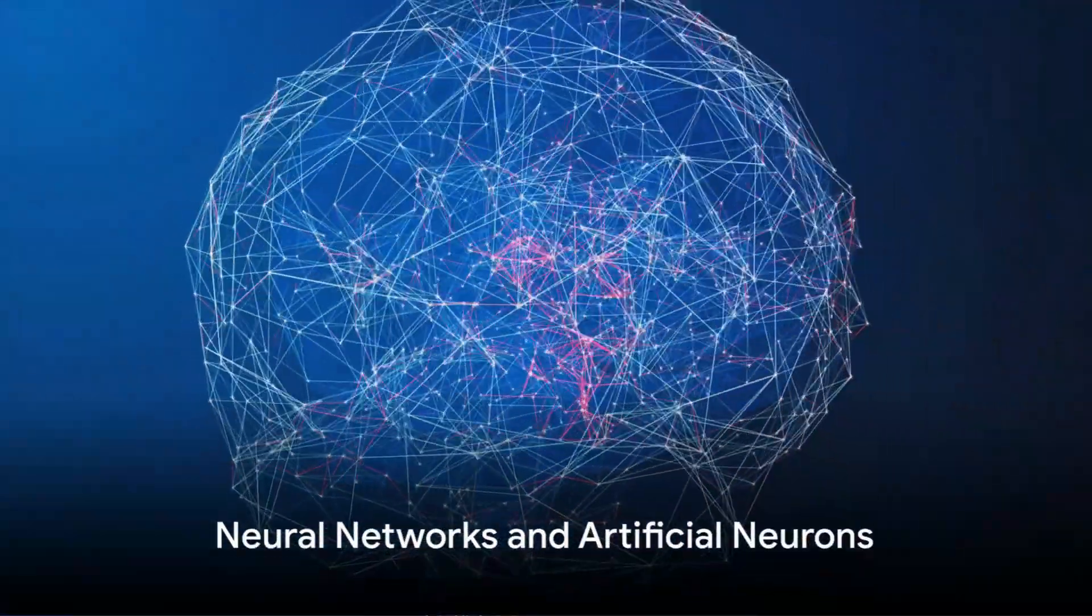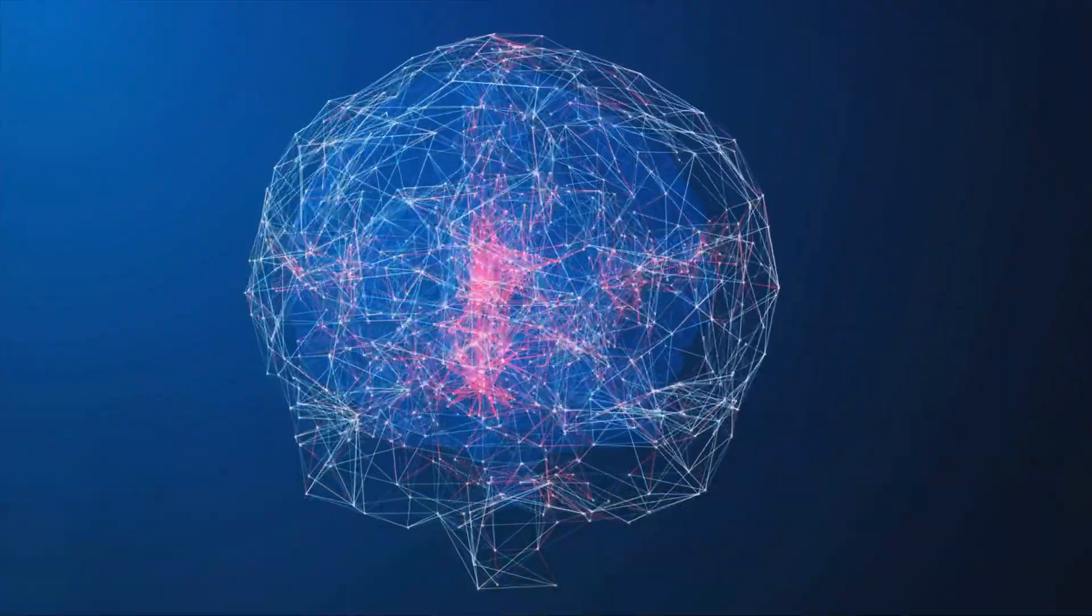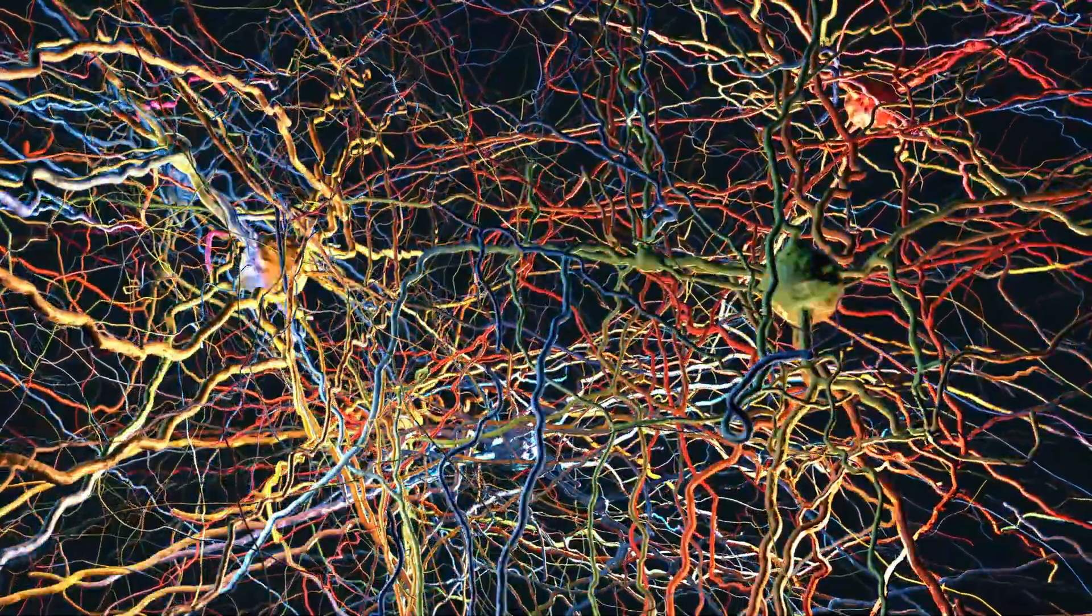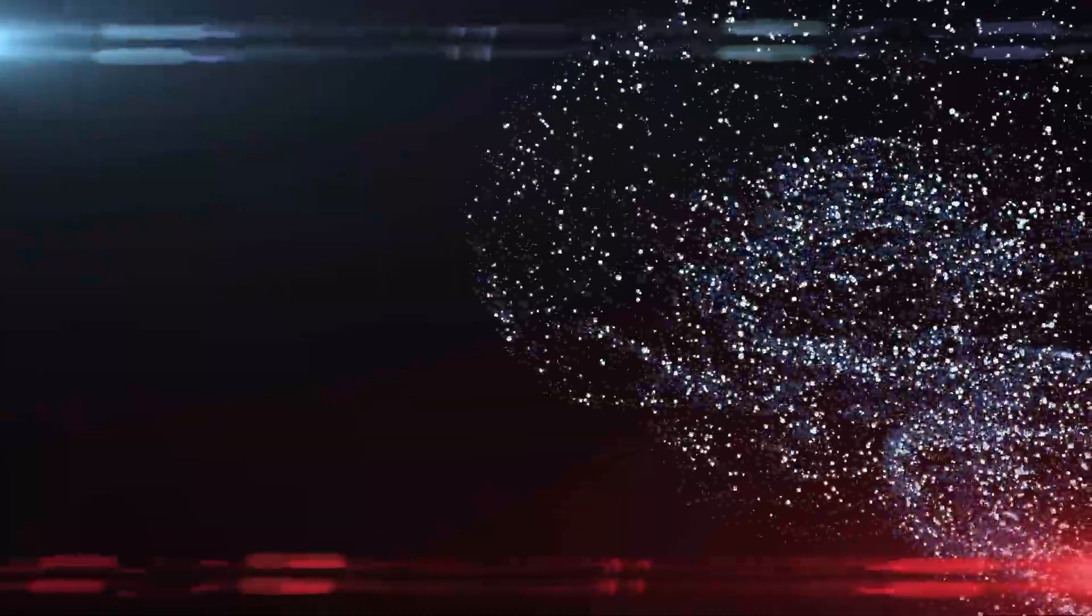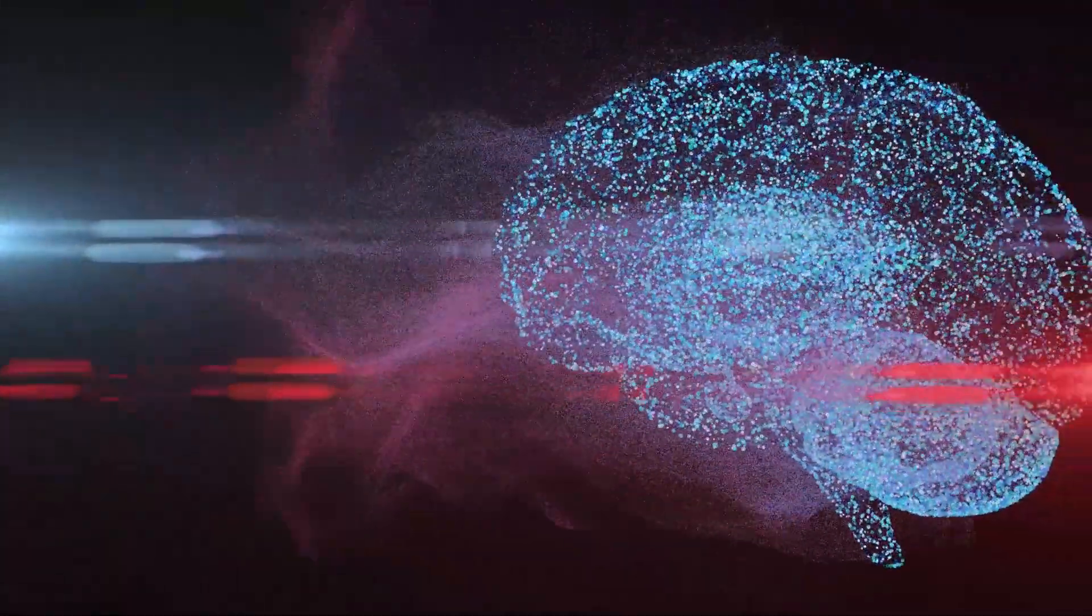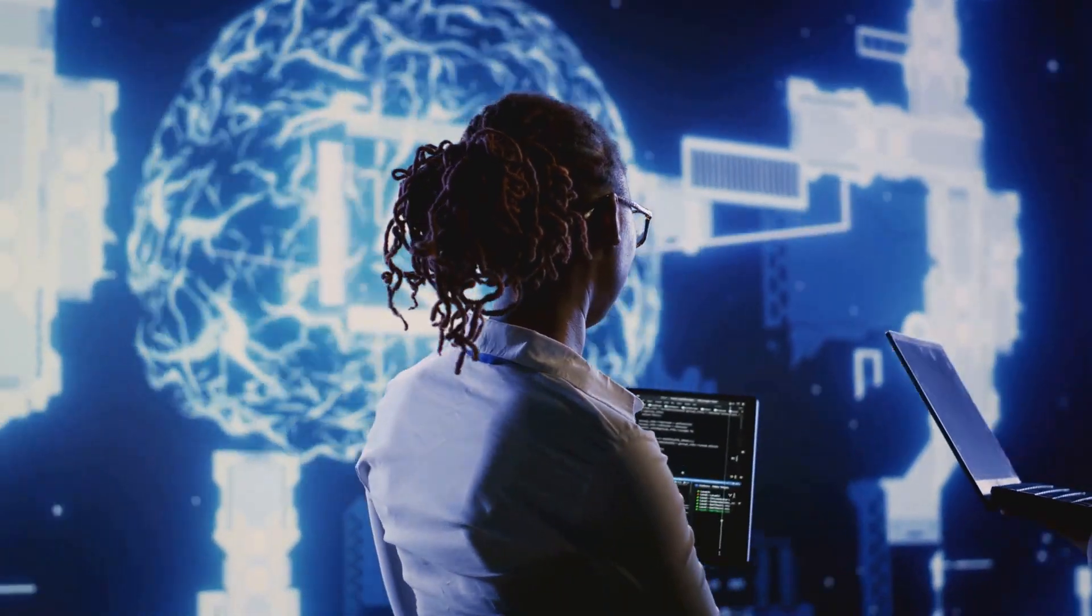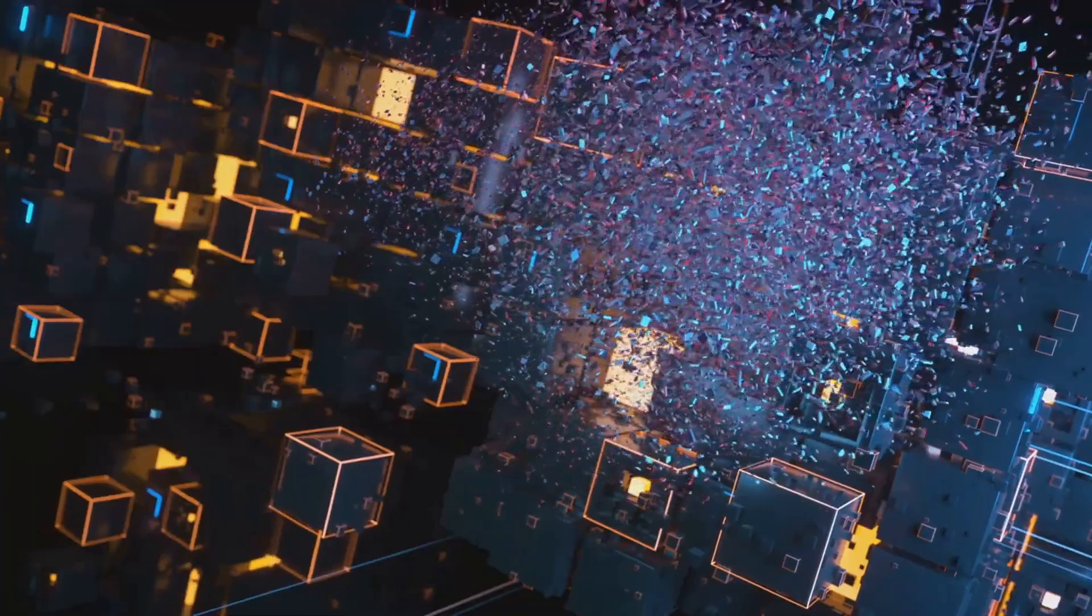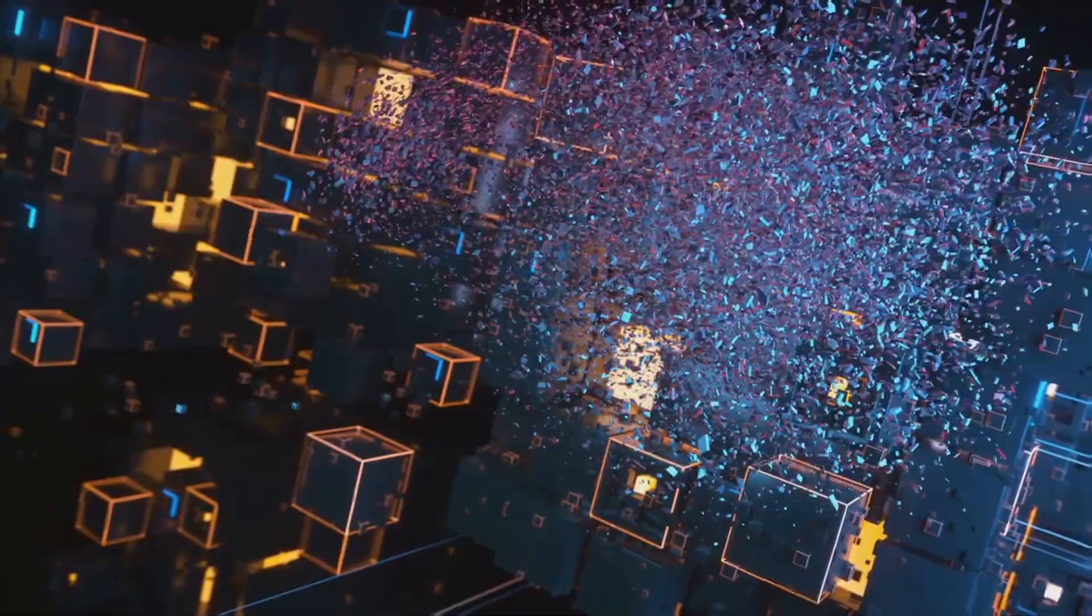At the heart of neuromorphic computing lies the concept of a neural network. Picture a web of interconnected nodes, each representing a neuron. These nodes, or artificial neurons, interact with each other much like the neurons in our brain. They learn from their interactions, adapt and evolve. This is the fundamental building block of neuromorphic computing.